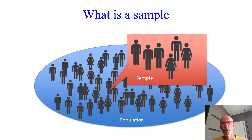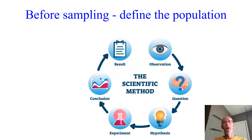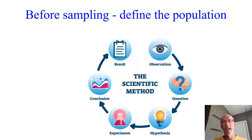So first of all, what is a sample? A sample is simply a subset of a population of interest. Before we get into sampling, we really need to determine our population of interest. For example, I'd love to do some research on the impact of courtside abuse on the wellbeing of young basketball referees.